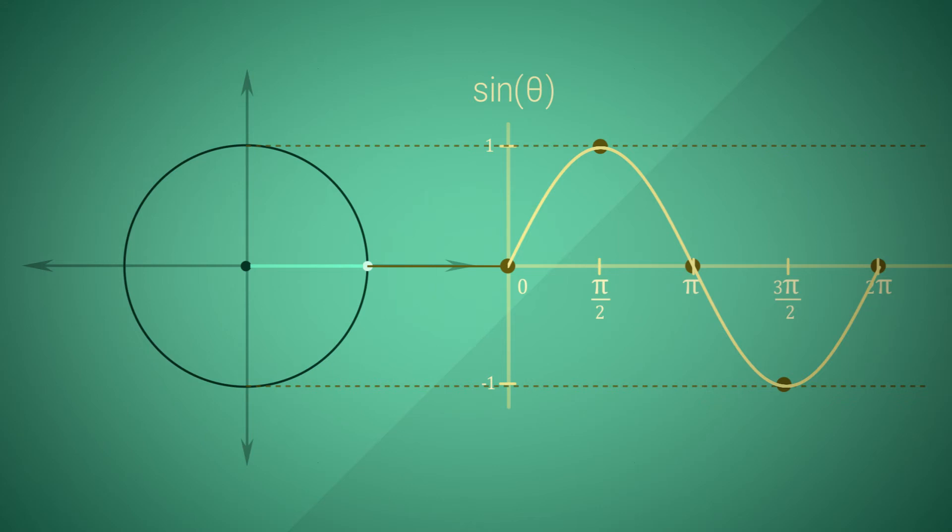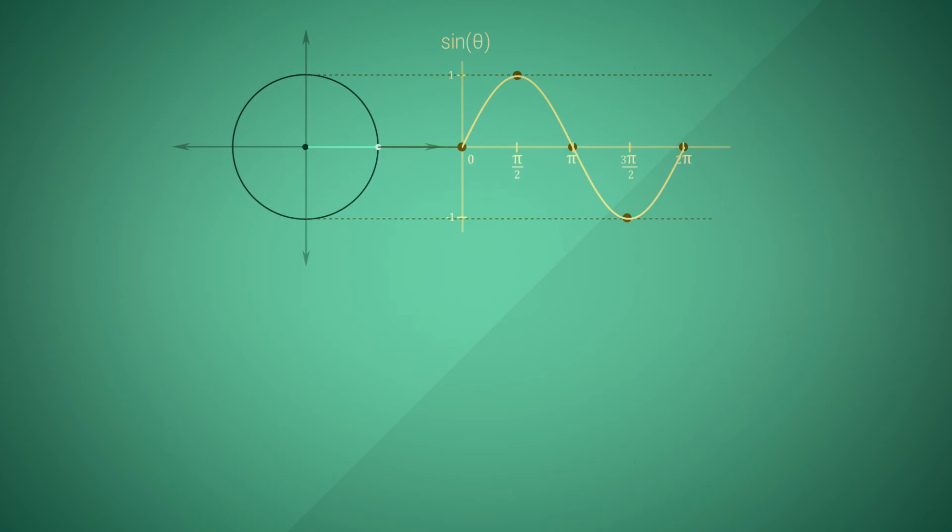Now let's focus our attention on the cos function instead, and the x coordinate. To plot this the same way, we'd have to change perspective and plot it perpendicular to the x axis. Let's take the same magic pen and plot it out. This is the cos wave.